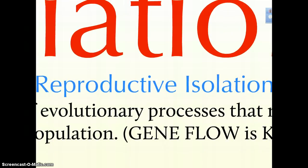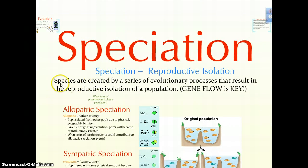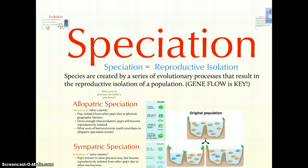This is the key idea of the entire chapter: speciation is about reproductive isolation. The whole idea is that if you can prevent populations from sharing genes with one another — if you can stop gene flow — then that can potentially lead to sufficient changes to cause differentiation into different species. Species are created when you stop gene flow between populations. Please make sure you commit that to memory.